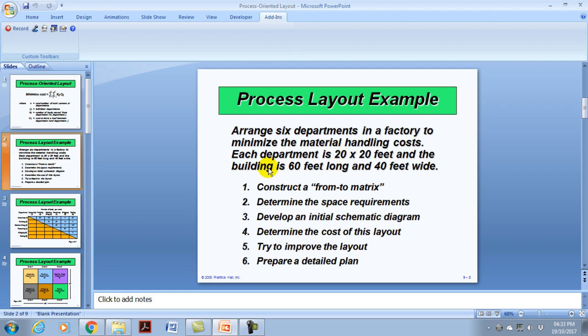So the example that we will use includes a factory that has six departments. Each department is 20 by 20 feet and the building is 60 feet long and 60 feet wide. In order for us to calculate the cost of movement between one department and the next, we have to first construct a from-to matrix and then we have to follow the other steps as well subsequent to that.